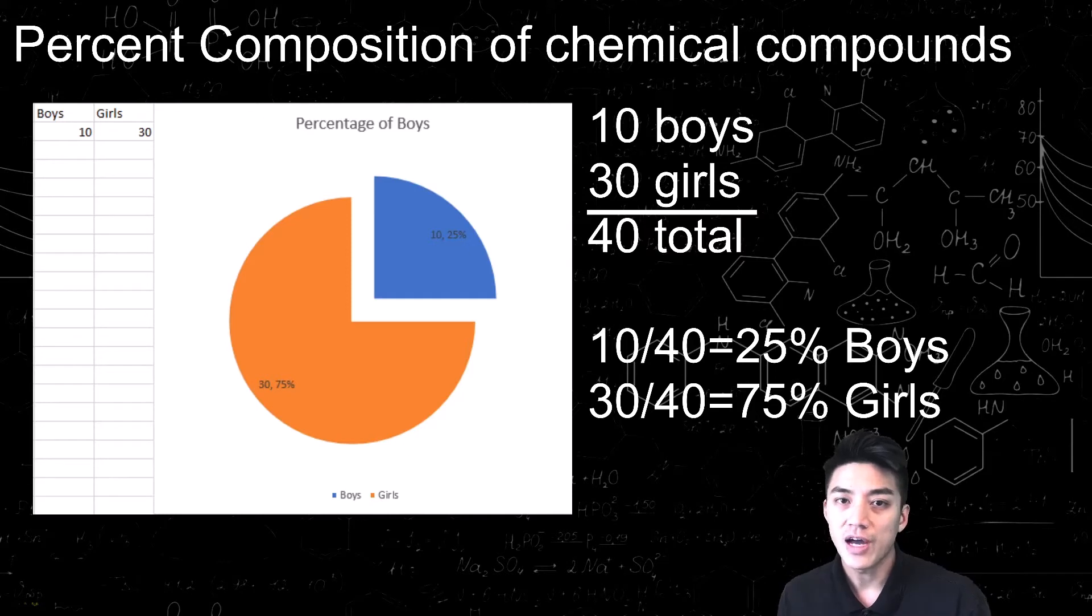For example, if I have 10 boys and 30 girls, and you're asked to find the percentage of boys, you would first find the total, which is 40.